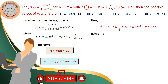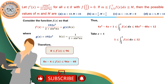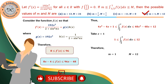Substituting x = 1: the left side 4x² − 4x evaluates to 0, giving a lower bound of 1 (after accounting for constant terms), and the right side gives 12. Therefore the integral lies between 1 and 12, so m = 1 and M = 12. Option D is the correct answer.